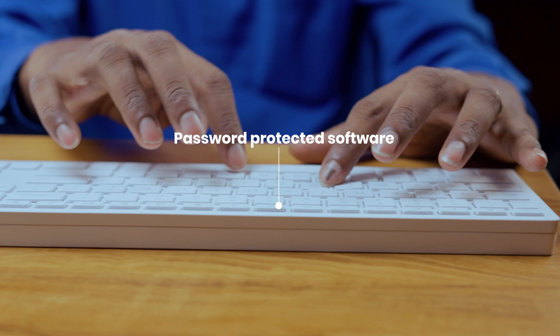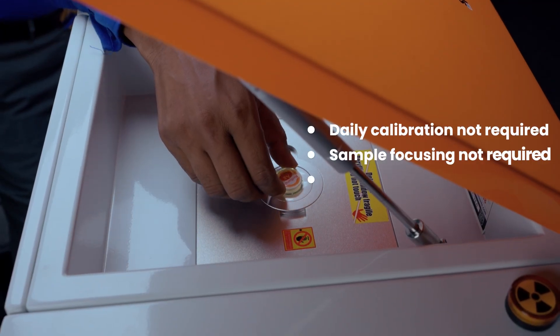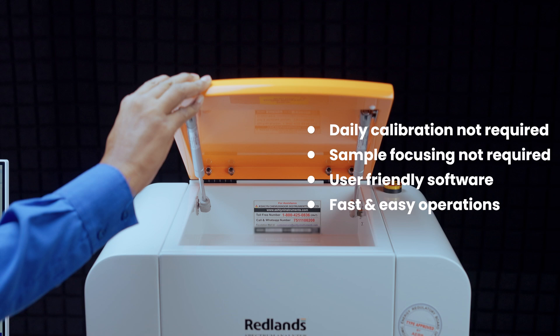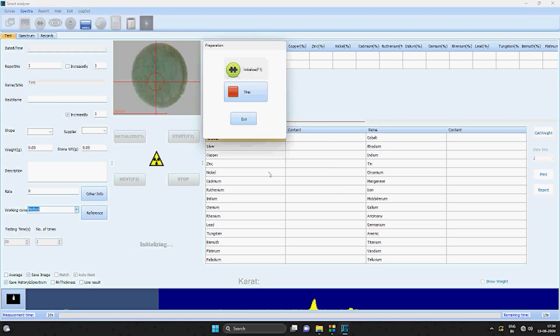Password protection helps avoid unauthorized use of the machine. The initialization process takes just 10 seconds with a silver sample, allowing users to verify machine stability before testing ornaments.